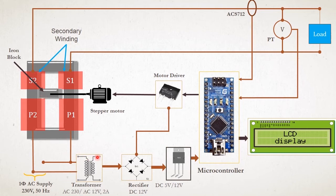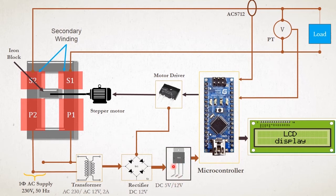Let's see the second part of our block diagram — the control system. In our controlling action, we use a 230V step-down transformer for step-down voltage, and after this it is used in the rectifier circuitry. After filtering, it is regulated to 5V and 12V according to requirements. Our motor driver runs on 12V and our microcontroller runs on 5V, so we give 5V supply to the microcontroller and 12V supply to the motor driver. Our LCD also runs on 5V supply.